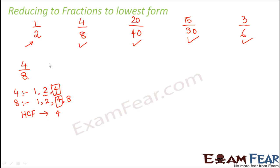Now what do we do? We divide the numerator and the denominator by 4. So we divide the numerator by 4, we also divide the denominator by 4. So 4 divided by 4, what is 4 divided by 4? Yes, it is 1. And what is 8 divided by 4? That is 2. So 4 by 8 is reduced to 1 by 2.